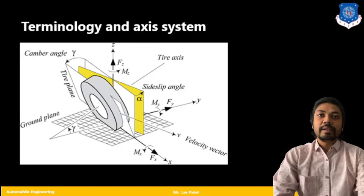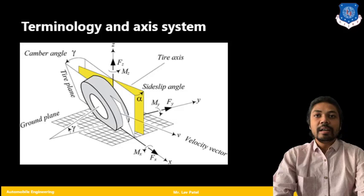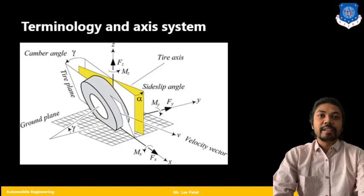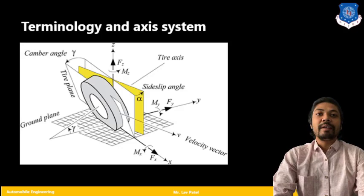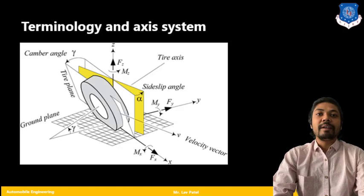Also, tire axis is there: X axis, Y axis, Z axis. Ground plane has been shown. Alpha angle, gamma angle has been given. Here, several forces like Fx, Fy, Fz forces are there. Moments Mx, My, and Mz are there. Let us see one by one what are the different terms and how to define individual terminology for that particular tire axis system.